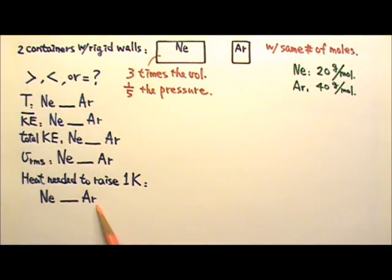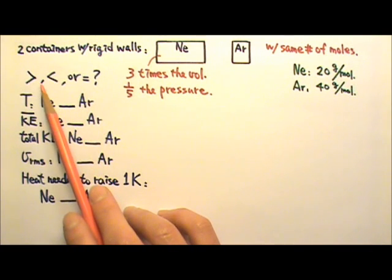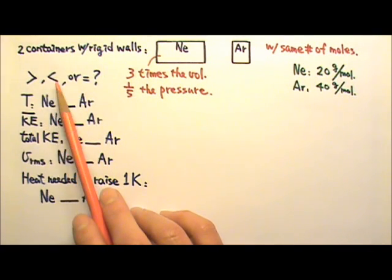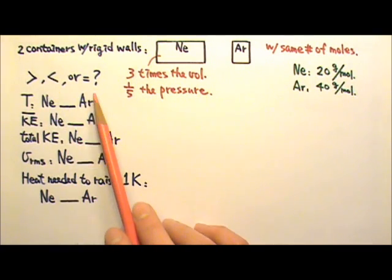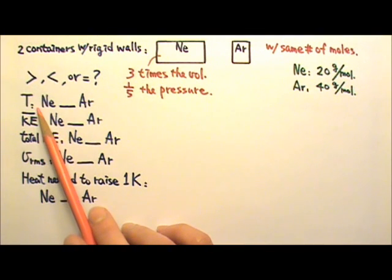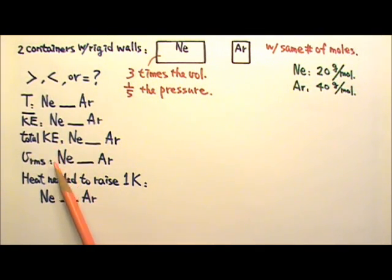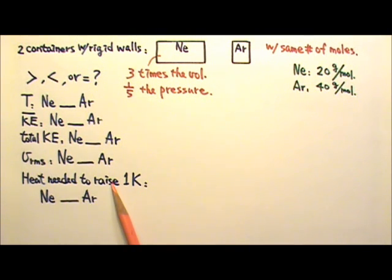Compare the following for the two gases. Determine whether you should fill in bigger than, smaller than, or equal to for the temperature, average kinetic energy, total kinetic energy, root mean square speed, and the amount of heat needed to raise the temperature of the gases by 1 Kelvin.